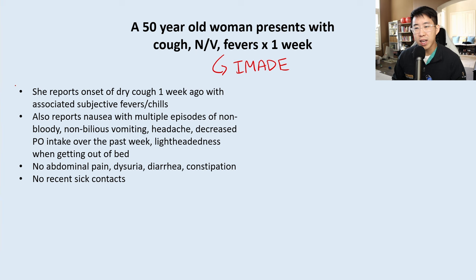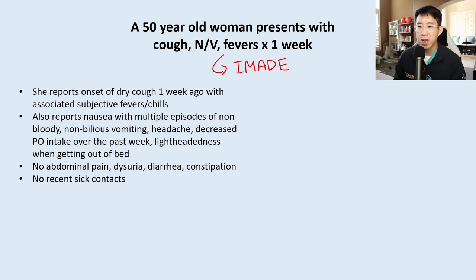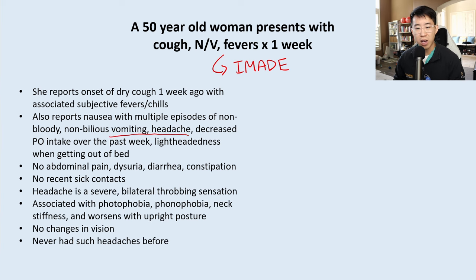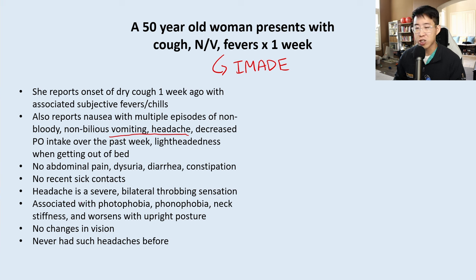One important component of this patient's history to elaborate on further is the history of vomiting and headache. Asking clarifying questions, she reveals that the headache is a severe bilateral throbbing sensation associated with photophobia, phonophobia, neck stiffness, and it worsens with upright posture.